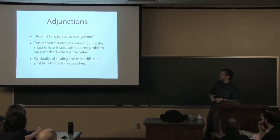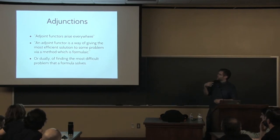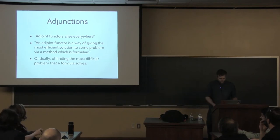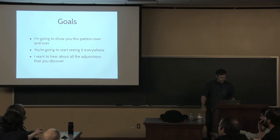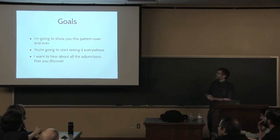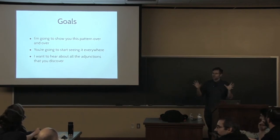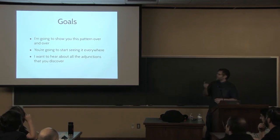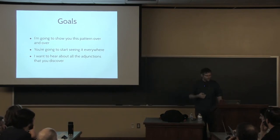If you think about that dually, then an adjoint functor is a way of finding the most difficult problem that some formulaic method can solve. My goal here is just to show you this pattern of adjunctions again and again in different settings. Hopefully you're going to start seeing it everywhere — you're going to have adjunction goggles on.